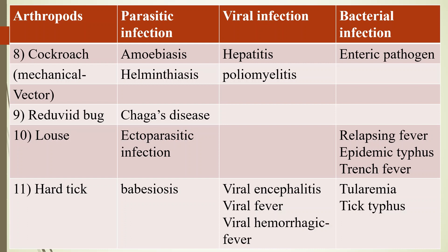Ninth, reduviid bug — causes Chagas disease, also called American trypanosomiasis, caused by Trypanosoma cruzi. Tenth, louse — causes ectoparasitic infection, and bacterial infections like relapsing fever, epidemic typhus (also called louse-borne typhus, caused by Rickettsia prowazekii), and trench fever caused by Bartonella quintana.